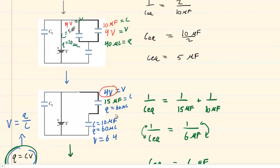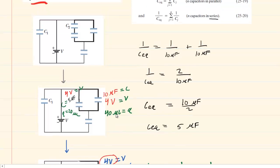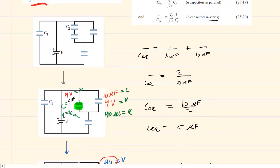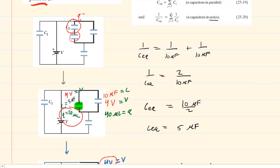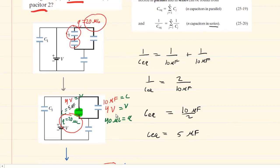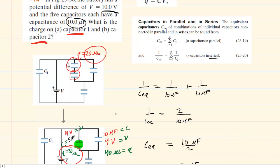Finally, moving one more time back up, we go from this capacitor back to the two from which it came. This is a series arrangement, so we bring the charge with us — 20 microcoulombs. That means this capacitor as well as that one each have a charge of 20 microcoulombs. That is indeed the answer to part B: capacitor 2 has a charge of 20 microcoulombs.